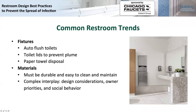With relation to fixtures, we spoke about auto-flushing. One of the things to look at is the splash and the plume associated with that. The addition of toilet lids — not very prevalent in our society today — can help with prevention of that plume. Another item is paper towel disposal. With relation to materials, while our focus today is on infection prevention and the spreading of germs, I don't want to lose sight of aesthetics and restroom design overall.